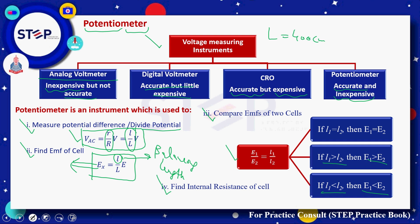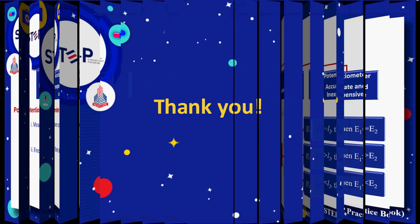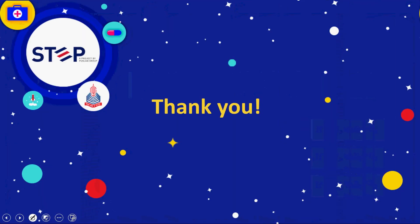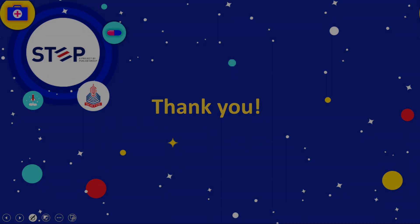Finally, the potentiometer can also be used to find the internal resistance of a cell — this is covered in detail in the practicals. From an MCQ perspective, these are the key formulas and concepts from this topic. For further practice, please consult the step practice book. Thank you very much.